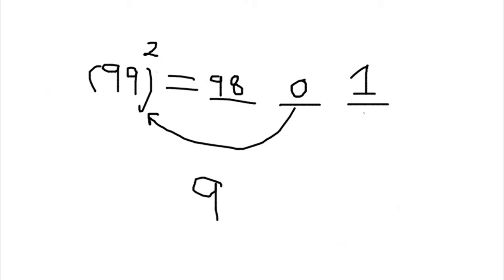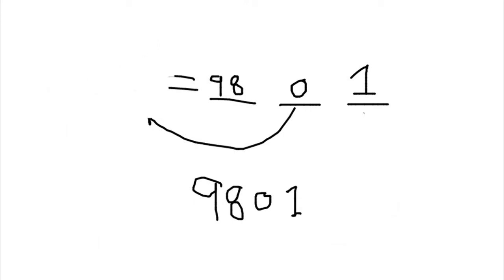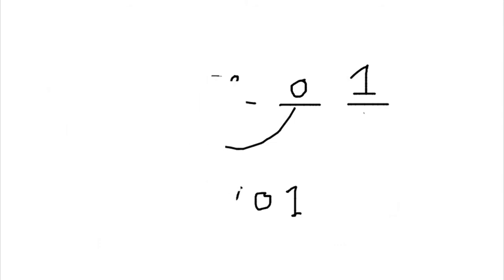In the third and final step, we simply put a 1. So the square of 99 is 9801. That's pretty easy to find out the square of a number which consists only of nines — you can take any big number.